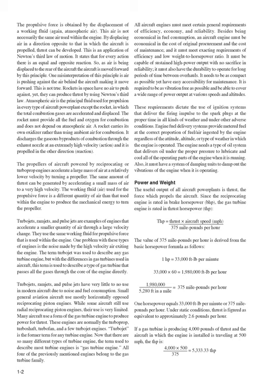One misinterpretation of this principle is that air is pushing against the air behind the aircraft making it move forward — this is not true. Rockets in space have no air to push against, yet they can produce thrust by using Newton's third law. Atmospheric air is the principal fluid used for propulsion in every type of aircraft power plant except the rocket, in which the total combustion gases are accelerated and displaced. The rocket must provide all the fuel and oxygen for combustion and does not depend on atmospheric air. It carries its own oxidizer rather than using ambient air, and discharges gaseous byproducts through the exhaust nozzle at extremely high velocity — action — and is propelled in the other direction — reaction.